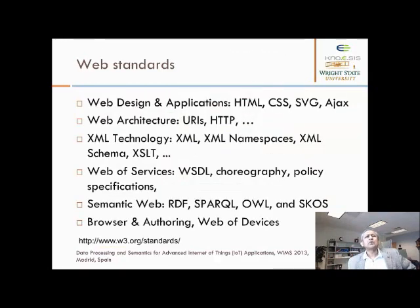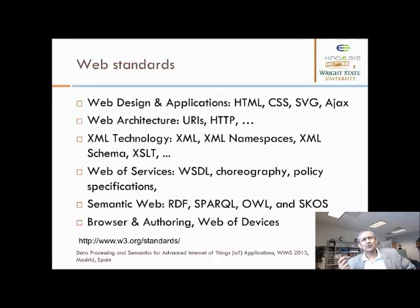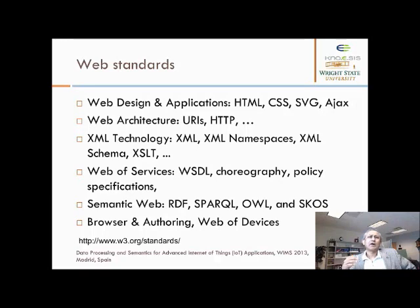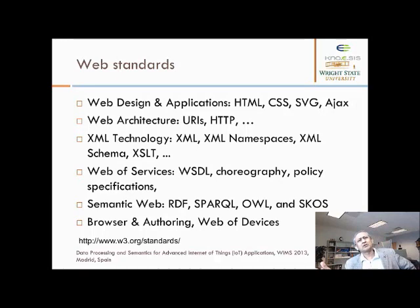The web is made possible by a whole series of standards. You have standards for web design and applications that include HTML, CSS, SVG, and Ajax. Then you have standards for the core web architecture, including how you address something — the Universal Resource Identifier — and HTTP is the core and fundamental part of the architecture. It's important to understand the distinction between the basic architecture role of HTTP versus the content and design role where HTML is the primary thing. With so much content being generated, it was necessary to develop a data exchange standard, and for that XML was developed — Extensible Markup Language.